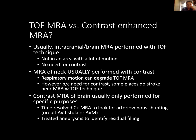Generally for the brain we do time of flight; for the neck we do with contrast. There is also a post-contrast MRA of the brain, reserved for specific purposes such as if we're worried about arteriovenous shunting in an AVM or AV fistula, or if a patient has had an aneurysm already treated — contrast-enhanced MRA is more sensitive for identifying any residual filling at the base of an aneurysm.